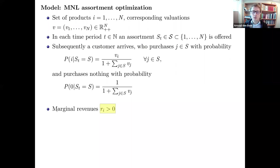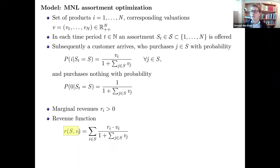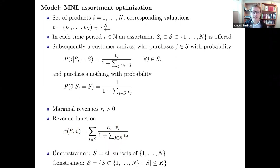If the customer chooses product i, the seller earns revenue rᵢ — which can incorporate marginal cost. The revenue function we try to maximize is a function of assortment S and valuation vector v: the sum over all products of rᵢ times the probability that product i is purchased. We can include constraints on the sets offered, such as offering at most k products.